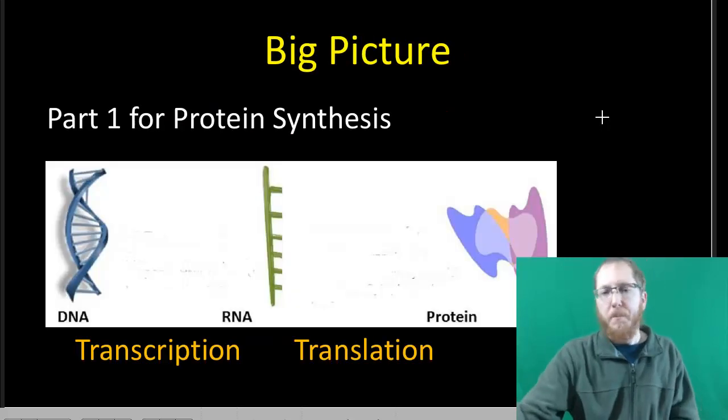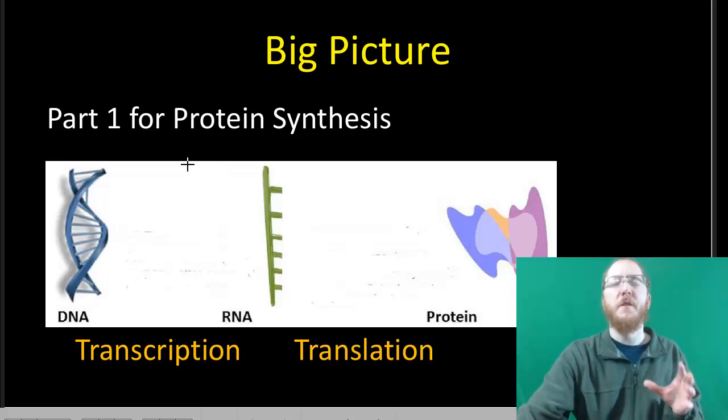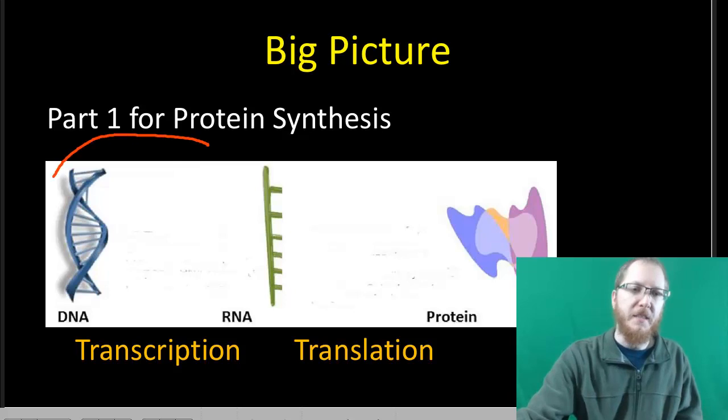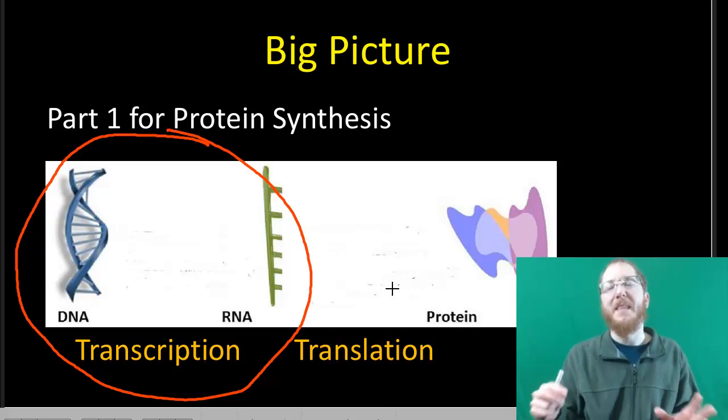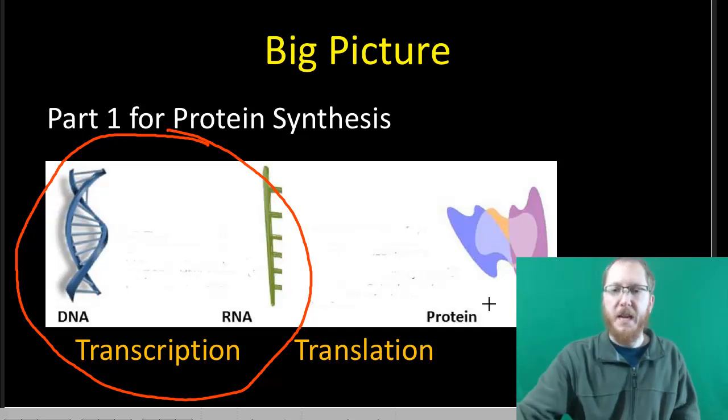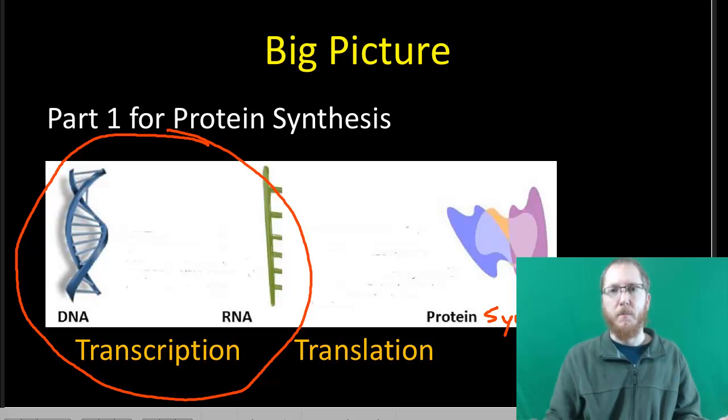Big picture - we're focusing on the first part of the central dogma we've already brought up. We're focusing on the DNA to RNA part because we need RNA to go through the process of translation, which will be the next process. Big picture is all about building this protein, or the other way of saying it, protein synthesis. That's our ultimate goal.